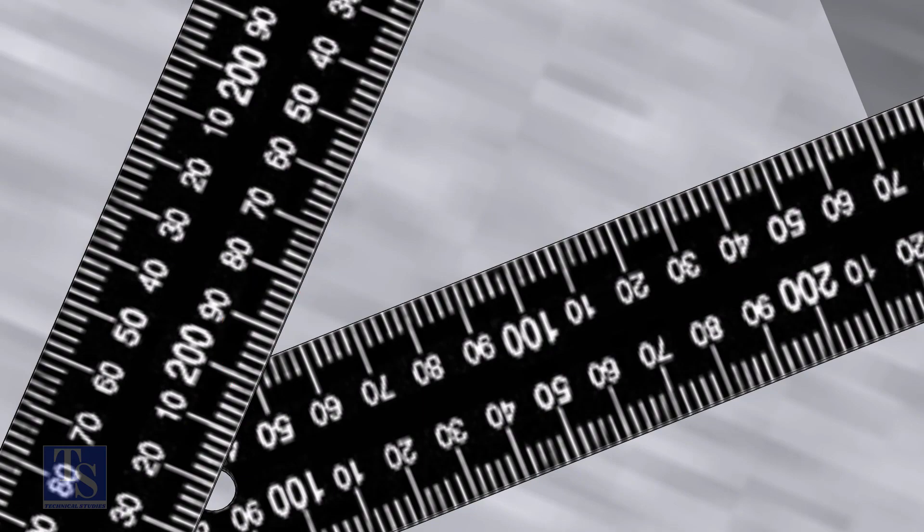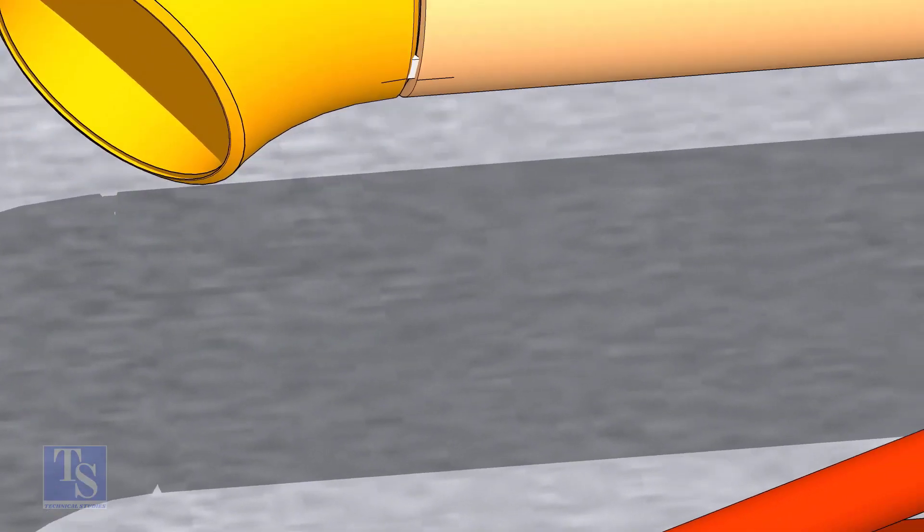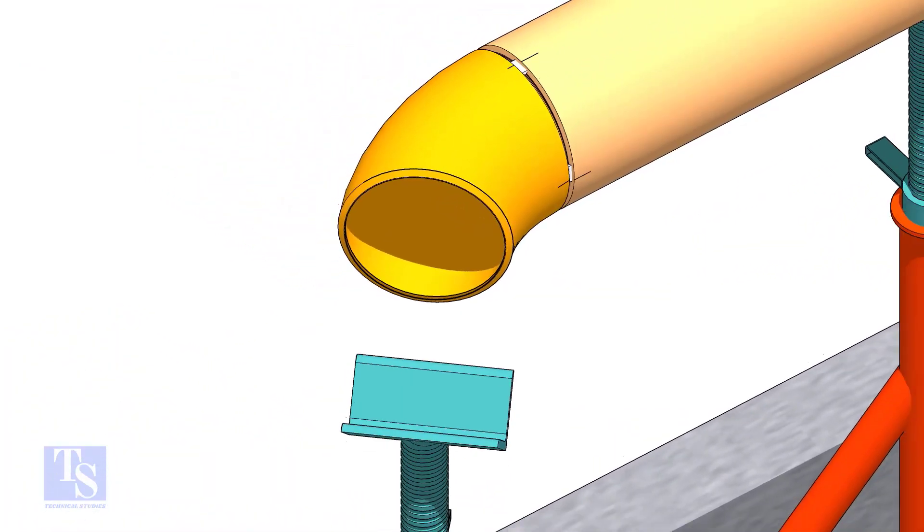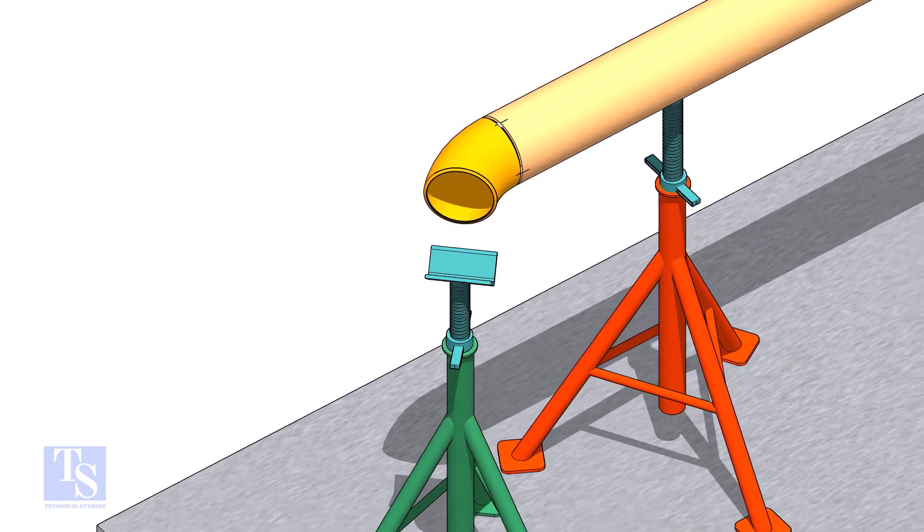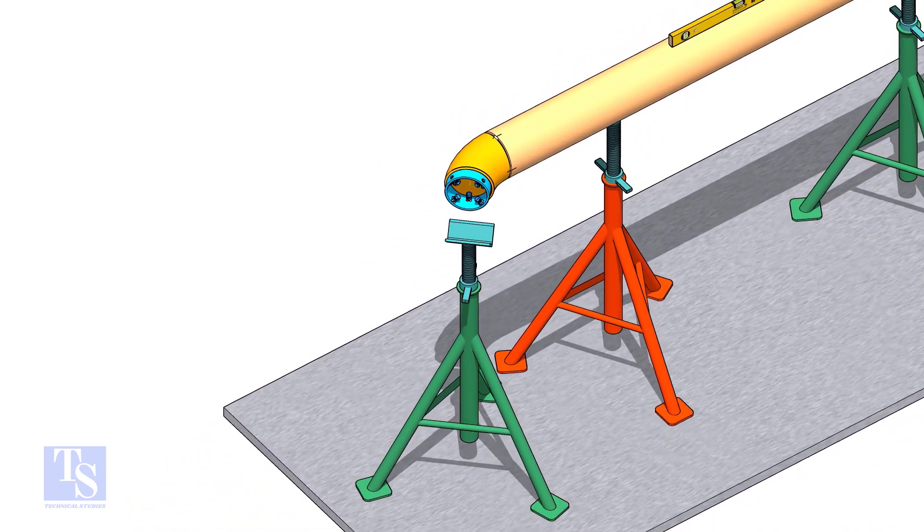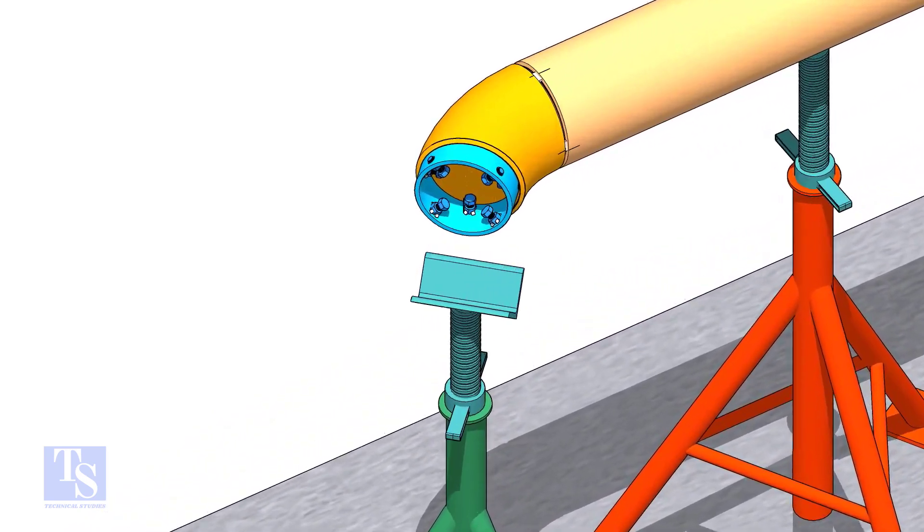Note down the readings. If both readings are the same, the elbow face is exactly 45 degrees to the pipe. Put the clamp in the elbow and tighten lightly.